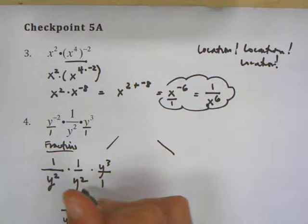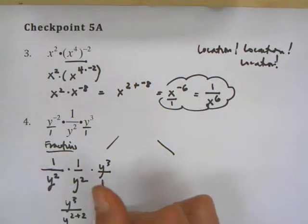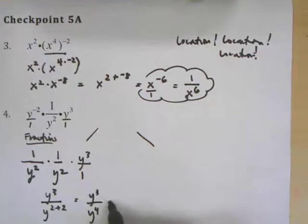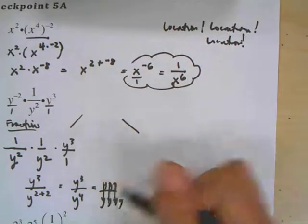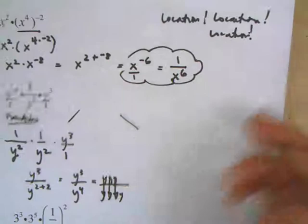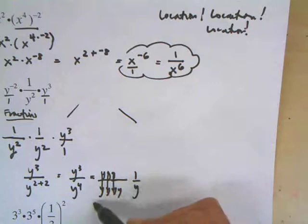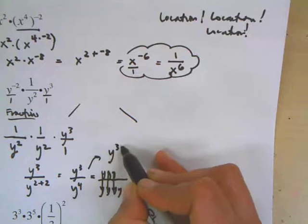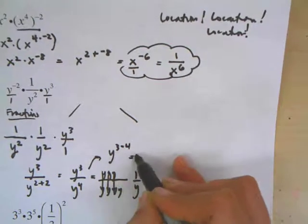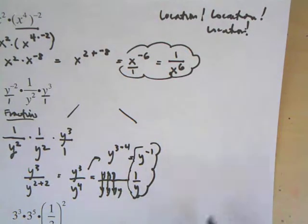When you multiply things with exponents, you just add the exponents, so the denominator becomes y to the fourth. This gives y to the third over y to the fourth. You can either write it all out or use your laws of exponents. The y is in the denominator, so it's 1 over y. If you used the laws of exponents, when you divide you subtract exponents: y to the third minus 4, which is y to the negative first. These two things are equivalent.